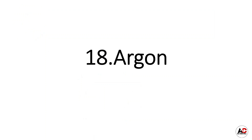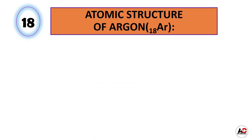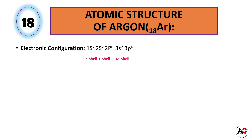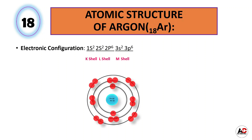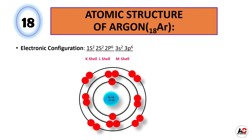Now the next element is argon. The atomic number of argon is 18, meaning it has a total of 18 electrons. The electronic configuration of argon is 1s2, 2s2, 2p6, 3s2, and 3p6. Due to this electronic arrangement, the atomic structure of argon is like this. It has 18 protons and 22 neutrons inside the nucleus and 18 electrons around the nucleus: 2 are in the K shell, 8 are in the L shell, and 8 are in the M shell.